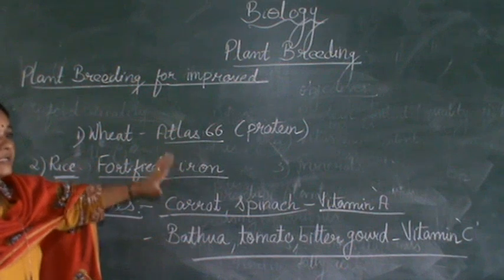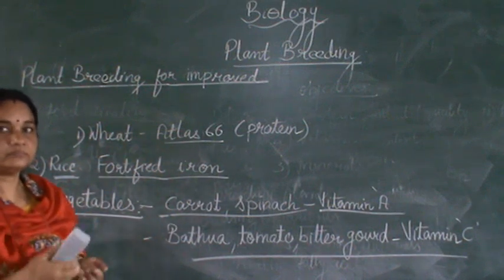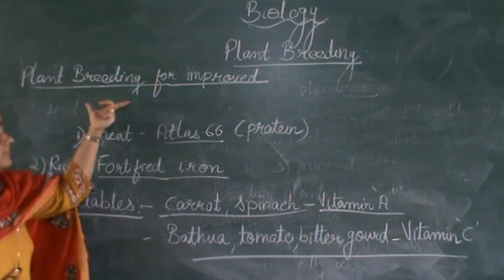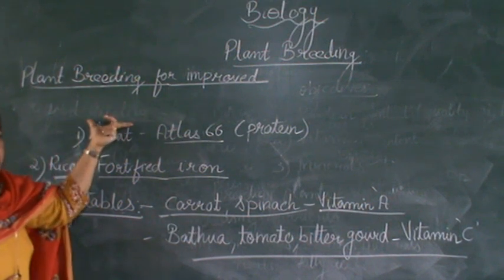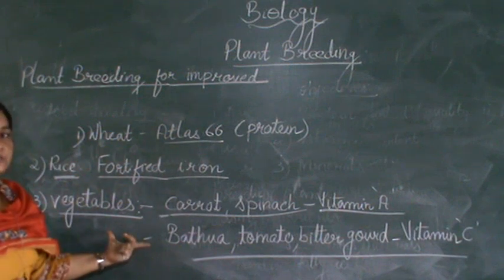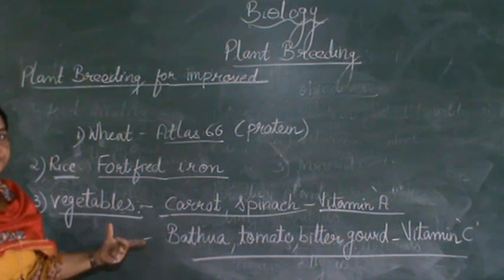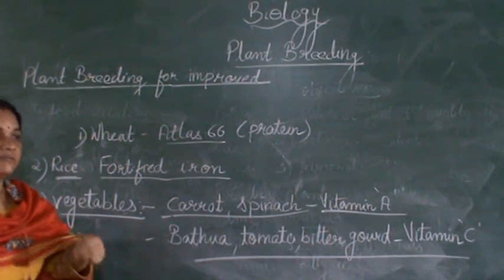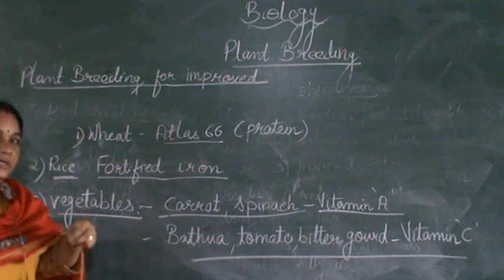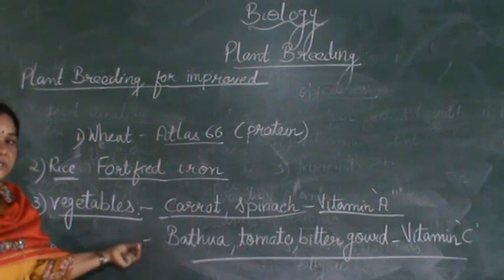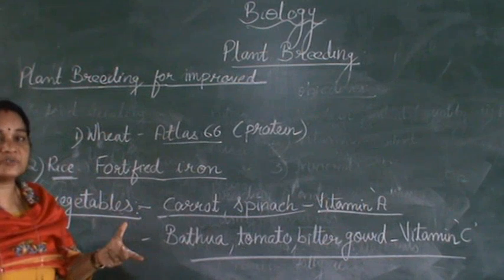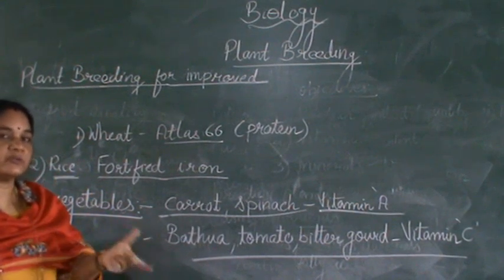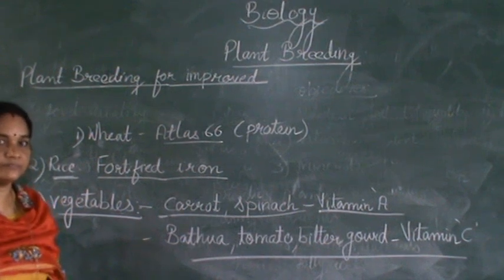These examples are very important — please learn them. These are the different examples of plants which have been bred for improved food quality. In the next session we will see the remaining topics: which other techniques have been developed to increase productivity and food crops for the ever-increasing population of the world. Thank you.